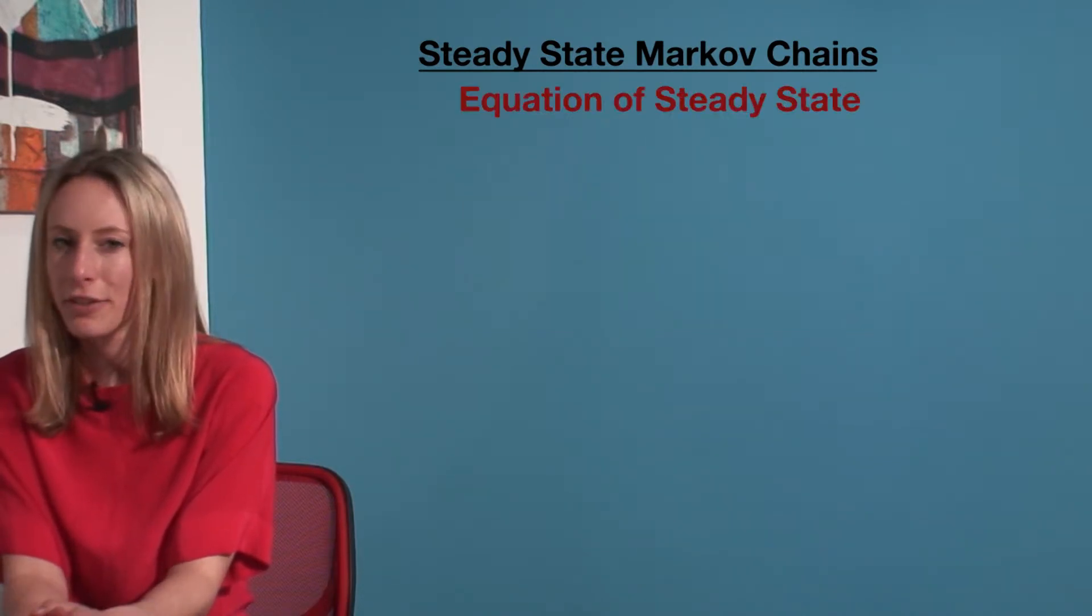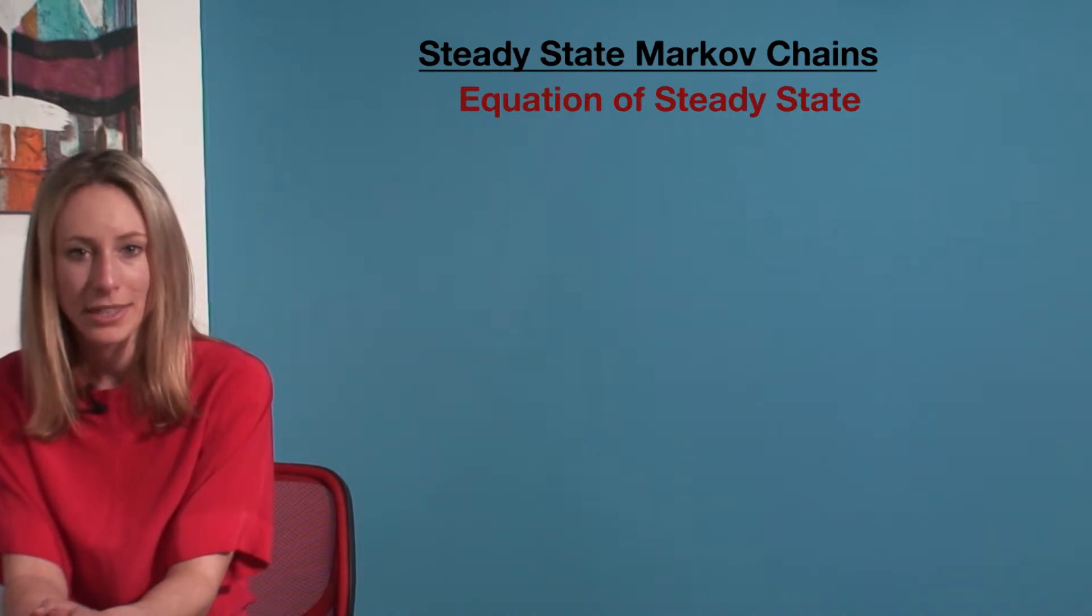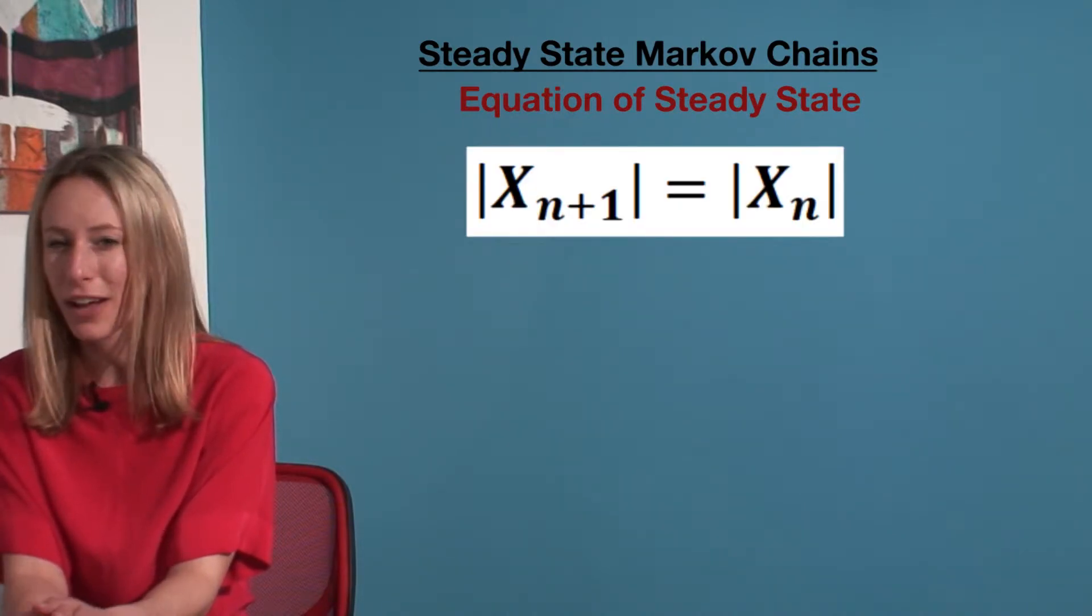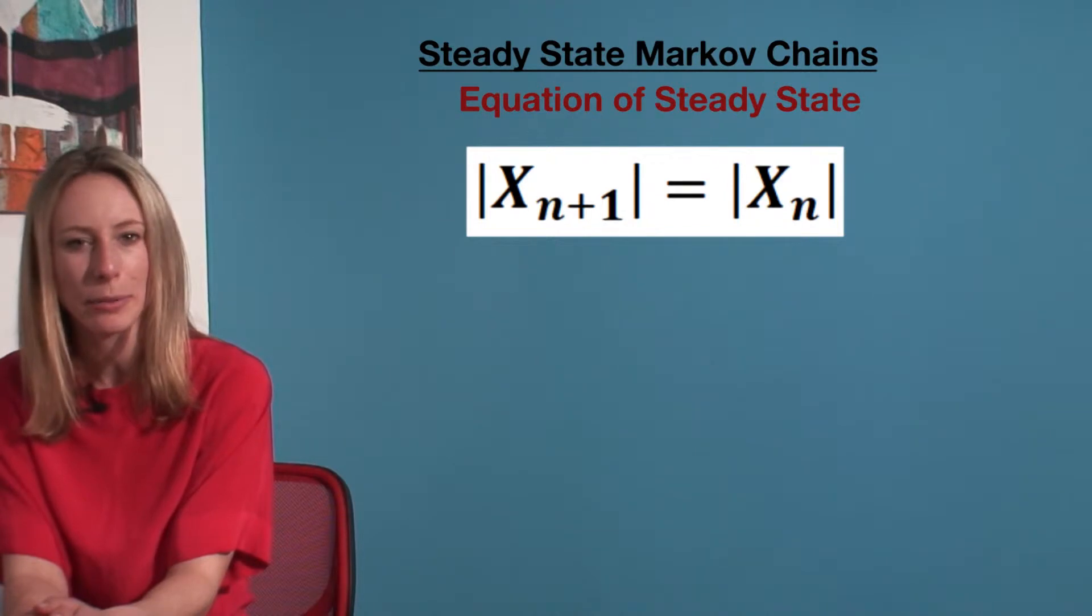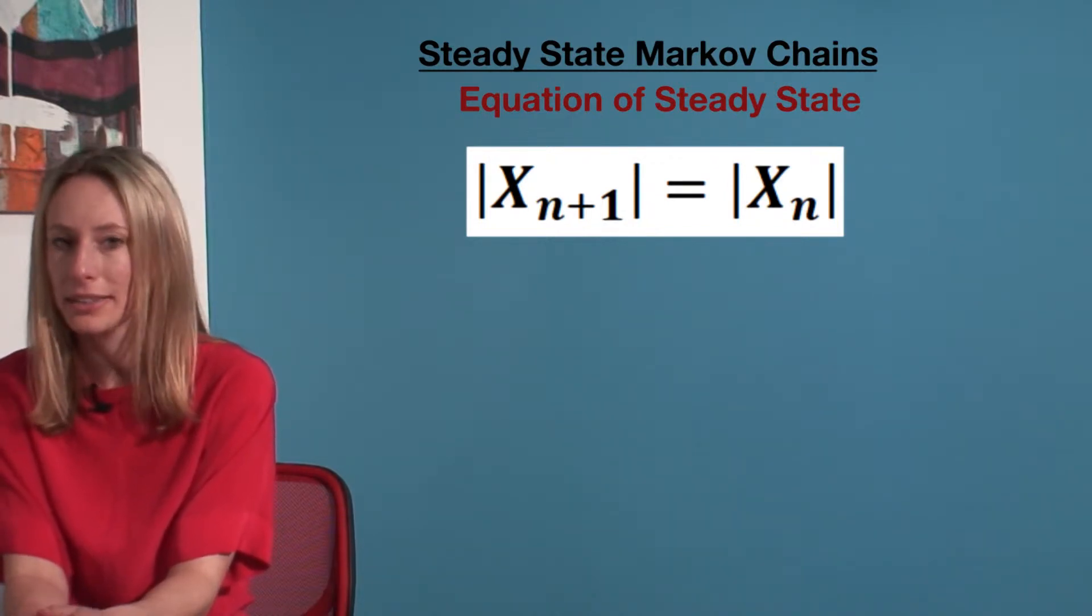Luckily, there is an easier way to find the steady state than putting the conditional probability to the power of infinity. Once we reach the steady state, the next time period will equal the previous one. That is, X_{n+1} equals X_n.